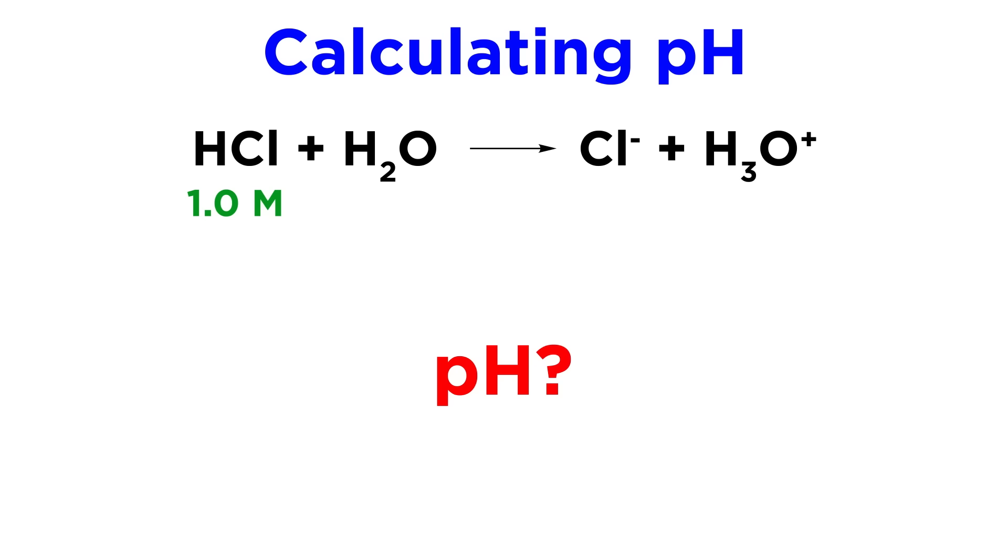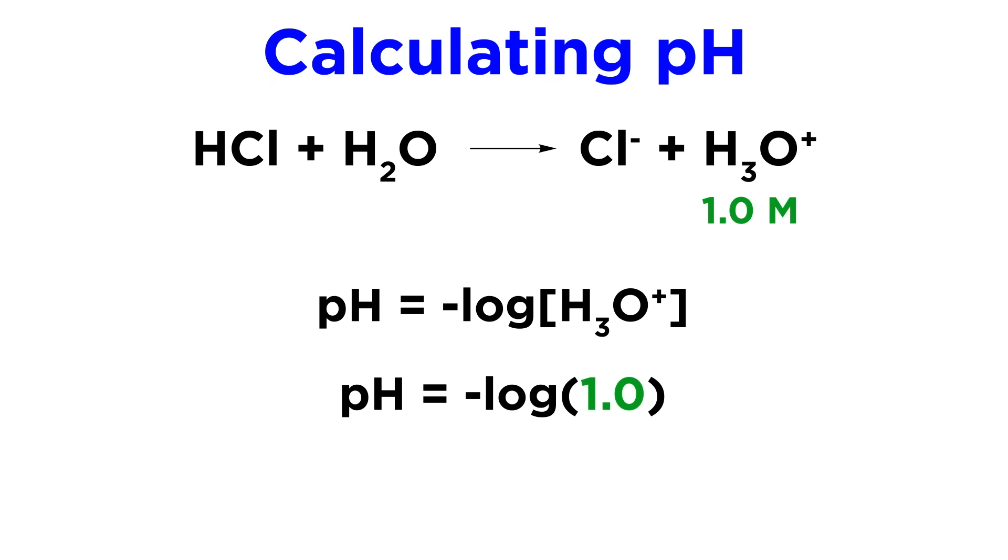First, if we have one molar hydrochloric acid, what will be the pH? Again, this means the solution is one molar in hydronium. We take the negative log of one, and we get zero. A one molar solution of HCl has a pH of zero.